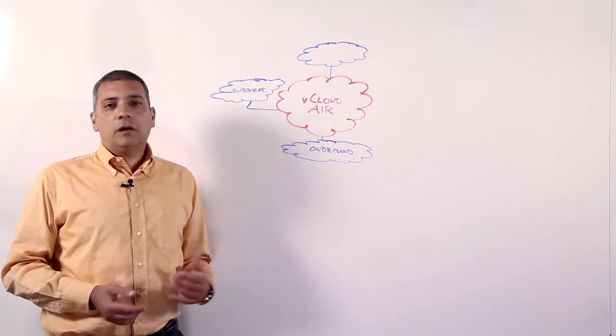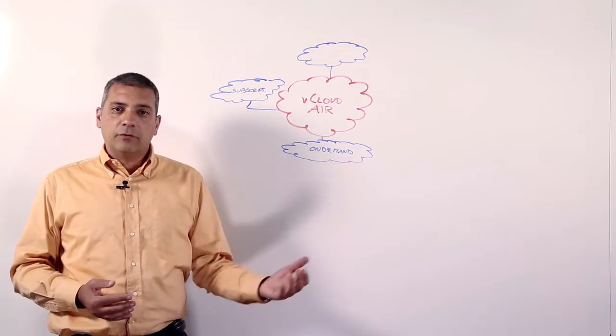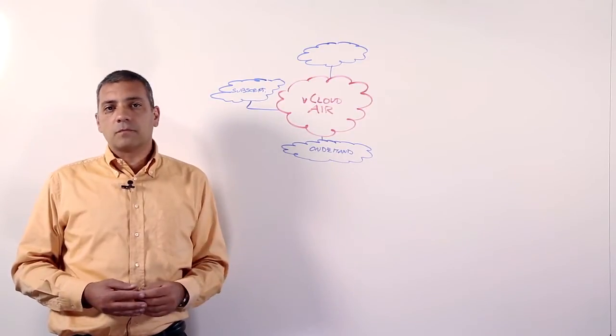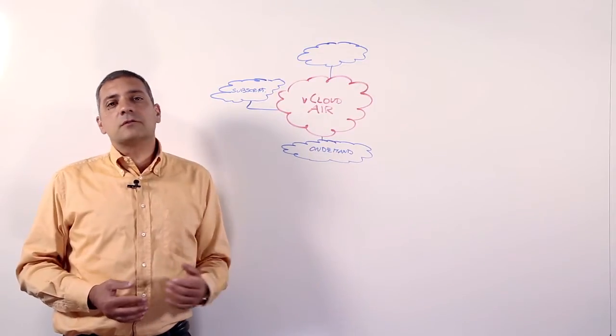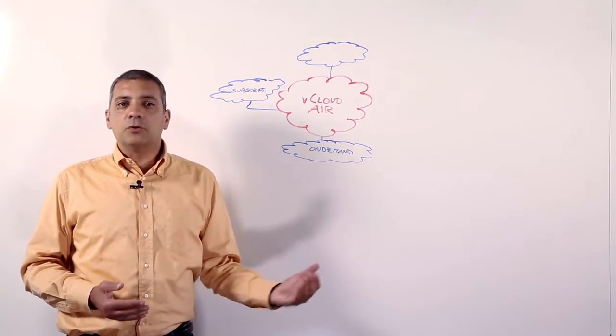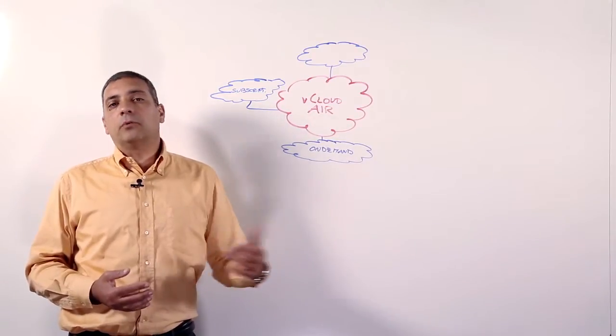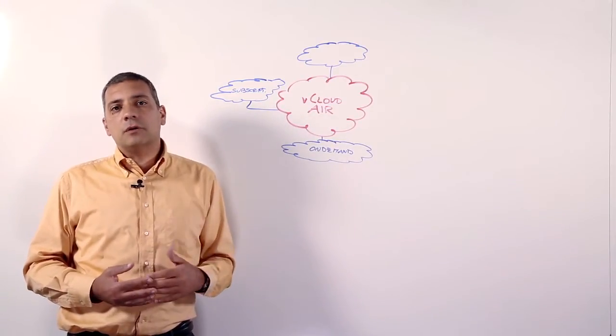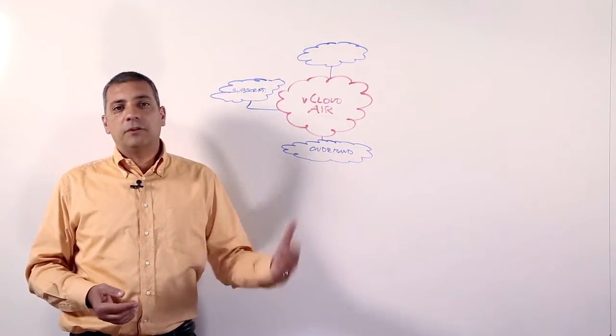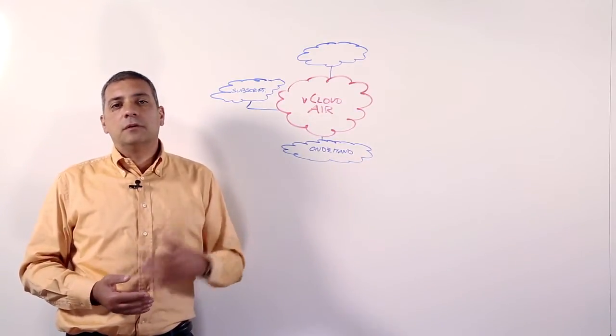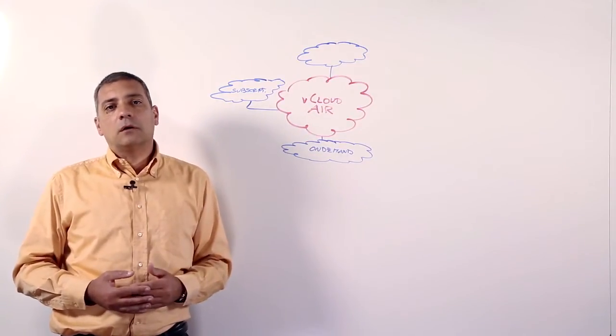So in vCloud Air, we use a technology called vCloud Director to deliver the compute service. We do not use a single instance of vCloud Director, but rather use multiple instances to support multiple use cases. One of which is to support our global footprint, meaning that we have different vCloud Director instances deployed all over the world to support our multi-region strategy.